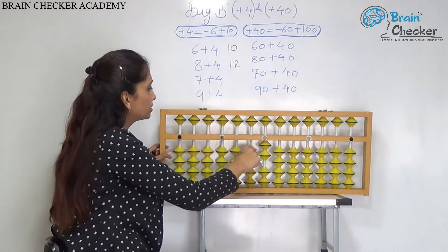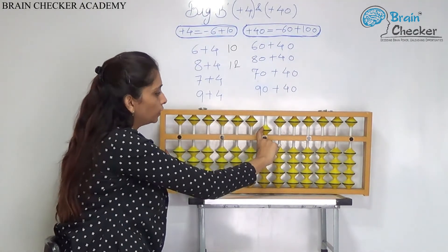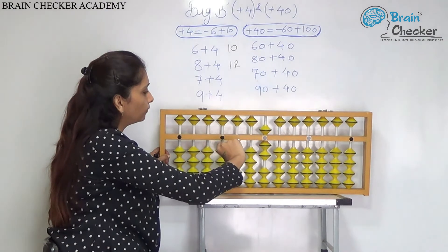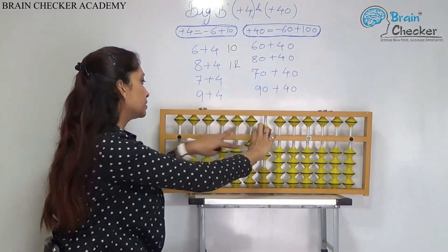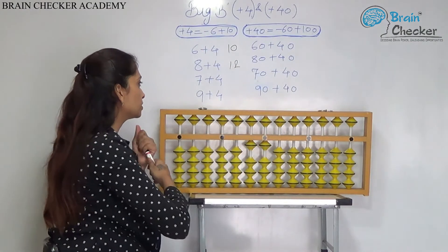Next, 7 plus 4. 7 on the unit rod, add 4. Add 10 and less 6. So, the answer is 11.